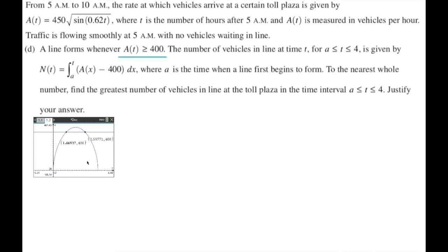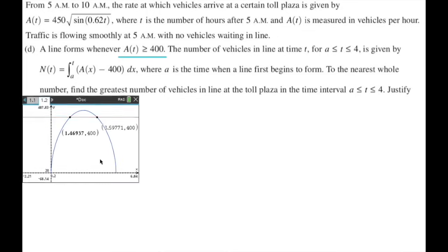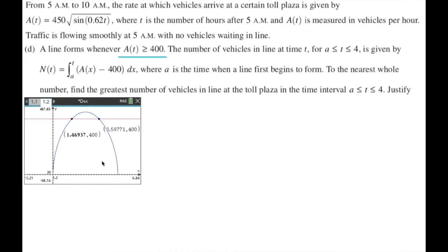First, I need to know when A of T is greater than or equal to 400. I've graphed A of T. A of T is first equal to 400 at approximately 1.46937, so A of T equals 400 gives T approximately 1.46937. I'm setting that equal to A because that's the first time. To use the candidate's test, N needs to be continuous.